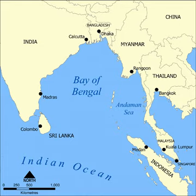The Bay of Bengal occupies an area of 2,172,000 square kilometres. A number of large rivers flow into the Bay of Bengal: the Ganges-Hooghly, the Padma, the Brahmaputra-Jamuna, the Barak-Surma-Migna, the Irawadhi, the Godavari, the Mahanadi, the Brahmani, the Baitarani, the Krishna, and the Kaveri.